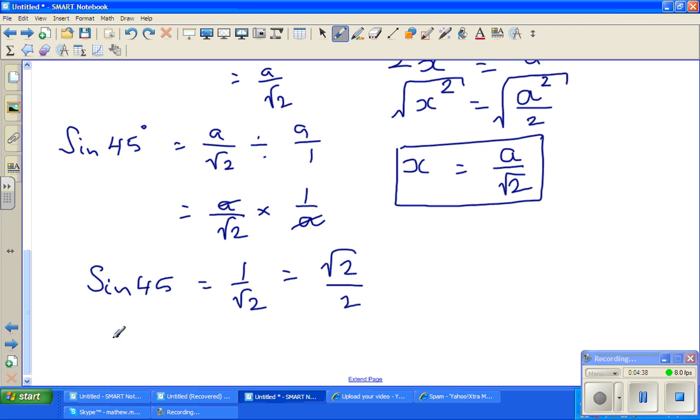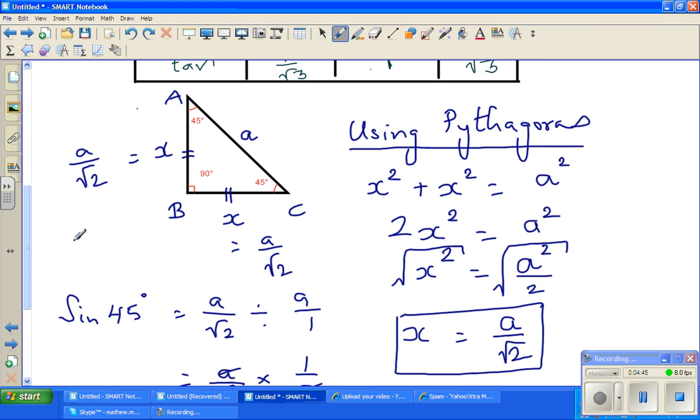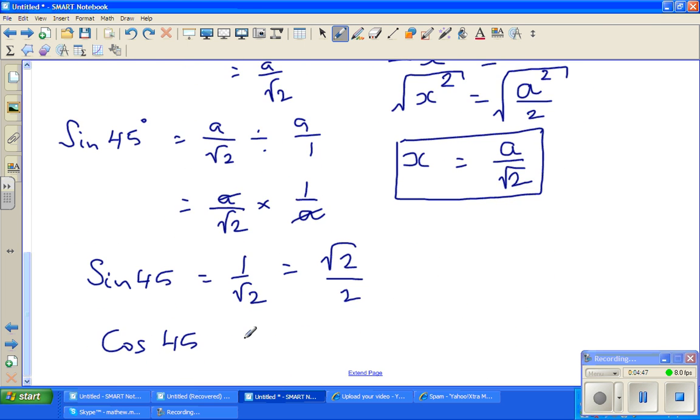Same way, cos 45 would be the same, because for 45 you take adjacent or opposite, they are the same. So sine 45 and cos 45 are the same, which is 1 over root 2, which is root 2 over 2.